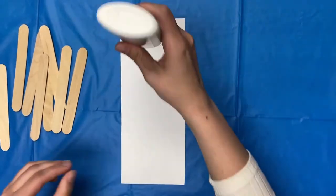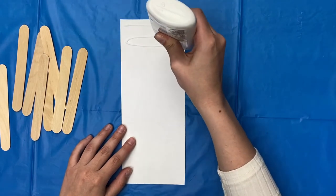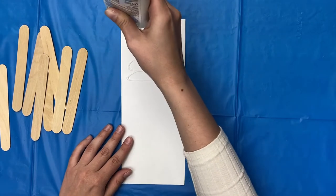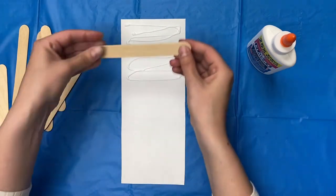Take your glue and spread it on the back of the paper. Then begin to place your popsicle sticks.